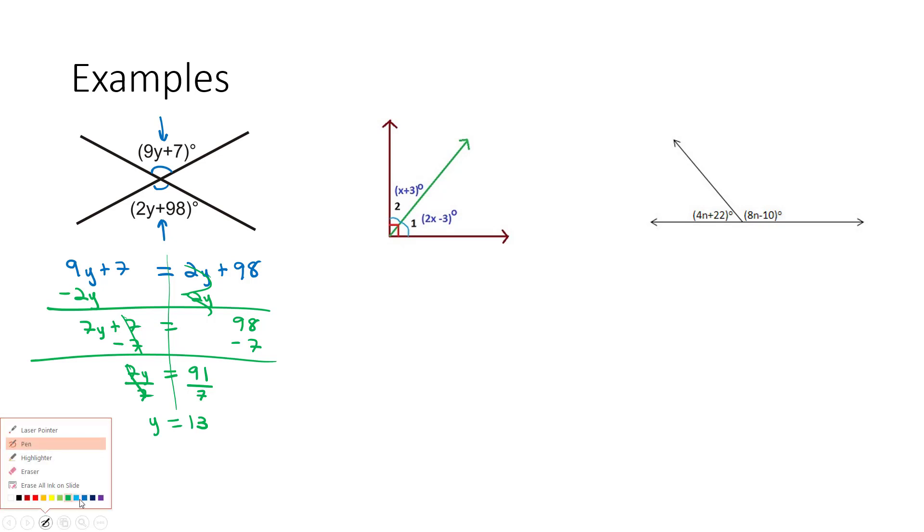But that doesn't tell us what the angles are. So let's go back to the angles. The angles are, let's do purple. The angles are 2y plus 98, or 9y plus 7. I'm going to do the 9y plus 7. 9y plus 7, 9 times 13 plus 7. 9 times 13 is 117. Plus 7 is 124.